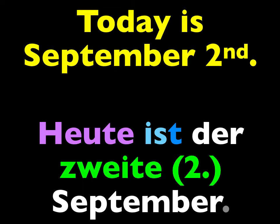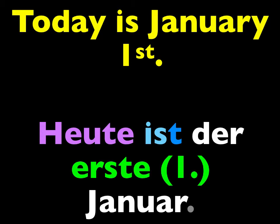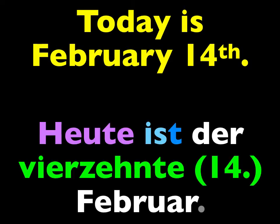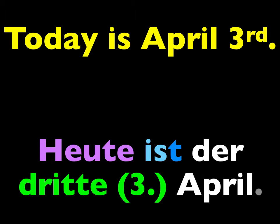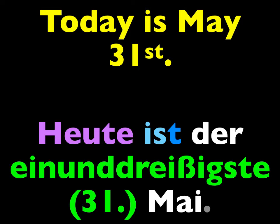Now to practice this for the next five slides, I'll give you the English and you give me the German. They will all start off like this: heute ist der, plus an ordinal number, plus the month. Let's try it. Heute ist der erste Januar. Heute ist der vierzehnte Februar. Heute ist der siebzehnte März. Heute ist der dritte April. Heute ist der einunddreißigste Mai.